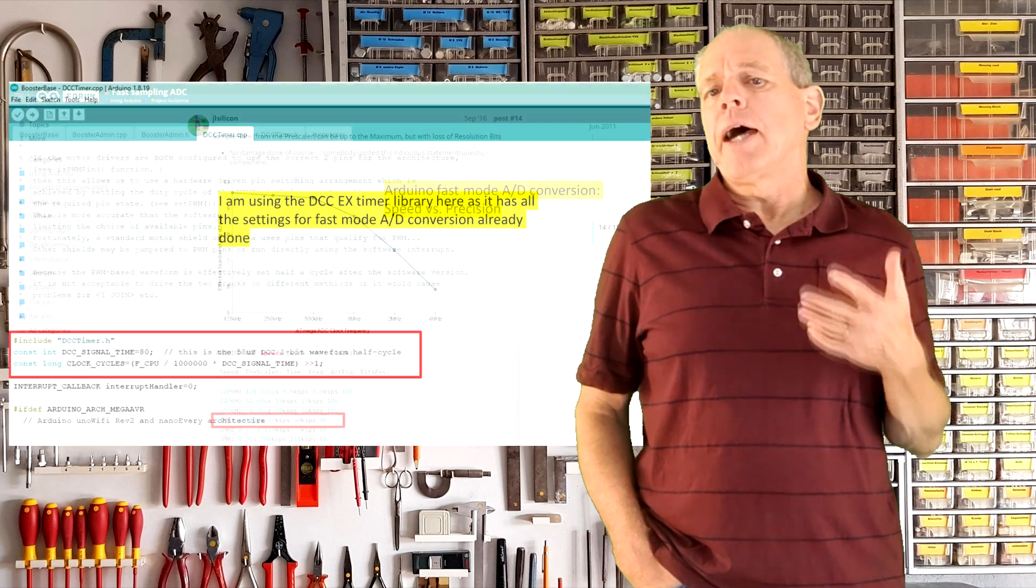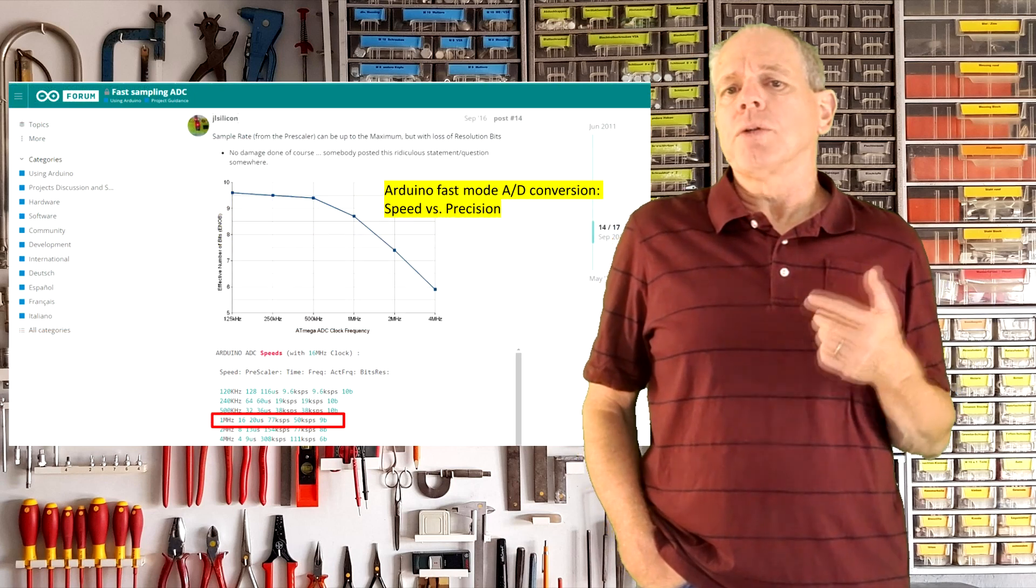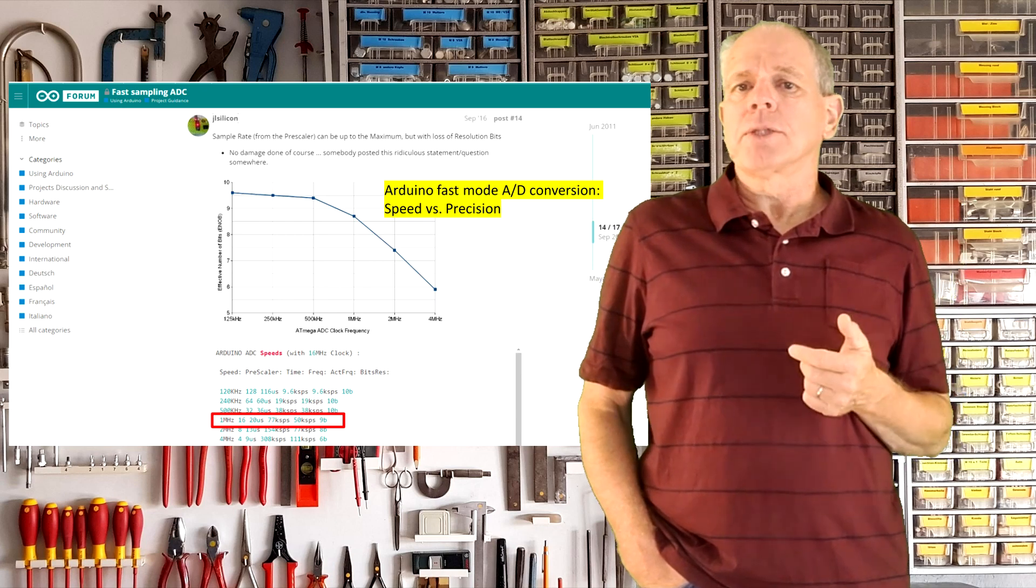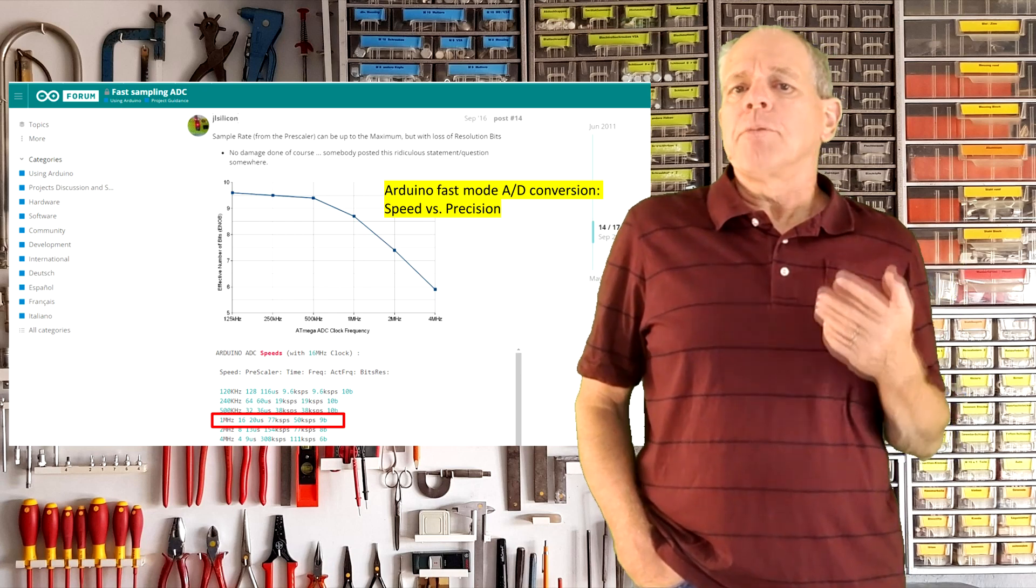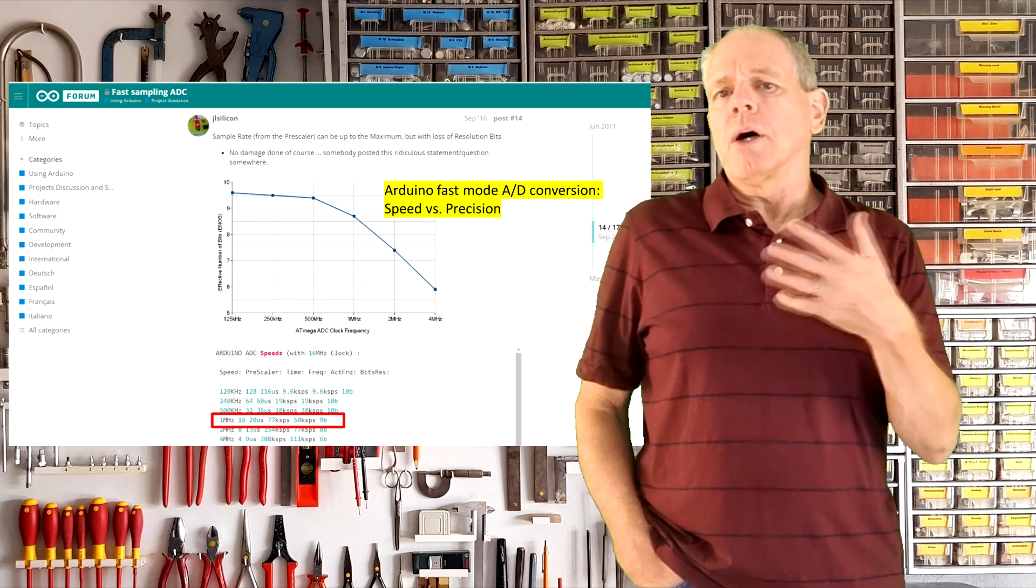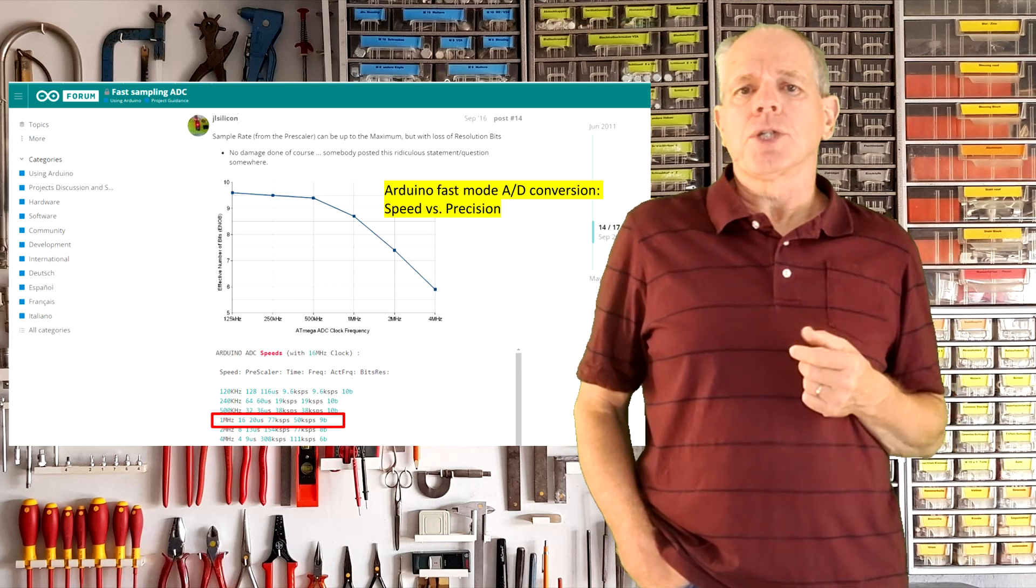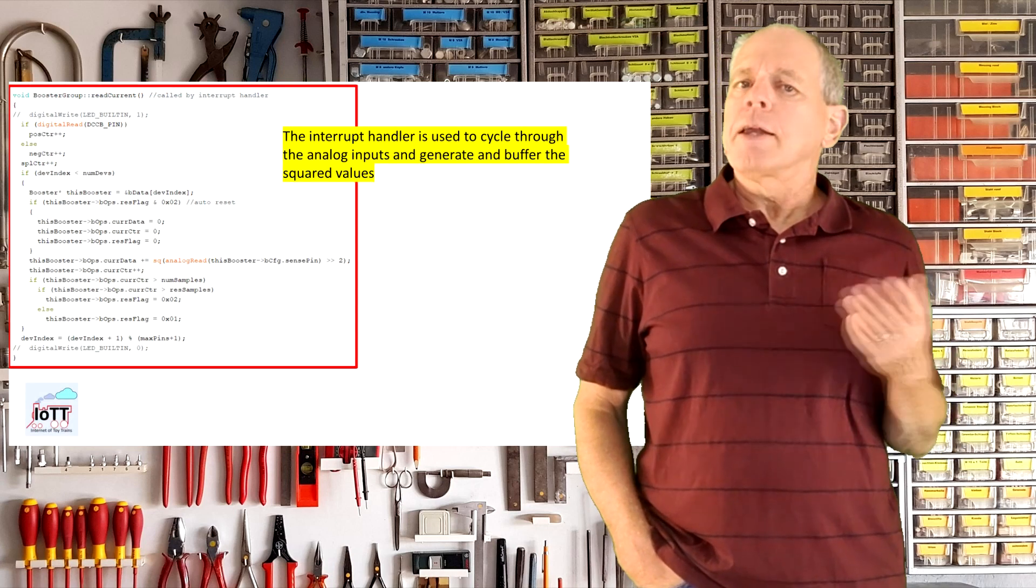The question was though whether the Arduino could read six analog ports frequently enough to calculate a meaningful current measurement. Doing an analog to digital conversion on the Arduino takes around 20 microseconds in fast mode and prevents the controller from doing other operations while the conversion is ongoing.